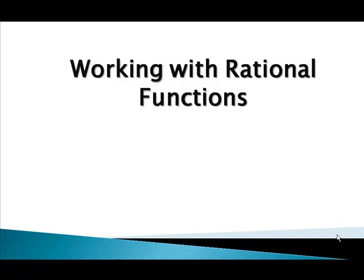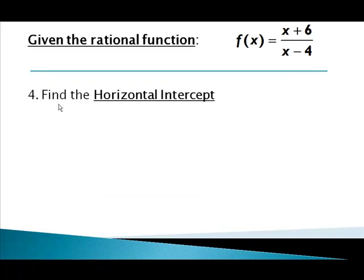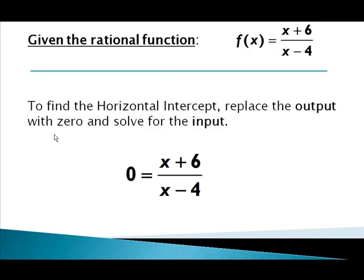In this video we're going to continue where we left off answering questions pertaining to rational functions. We answered the first three questions and now we're going to finish the next two. So I'd like to find the horizontal intercept. To do that we're going to replace the output with zero and solve for the input. This is the